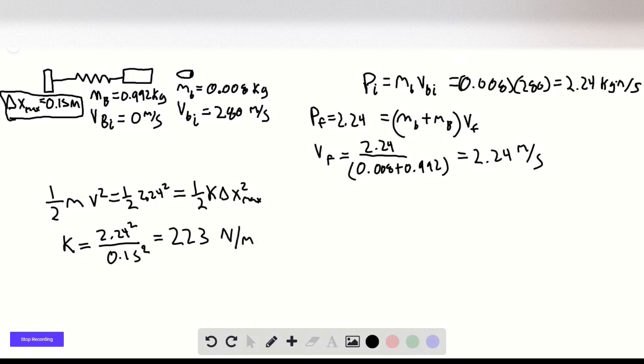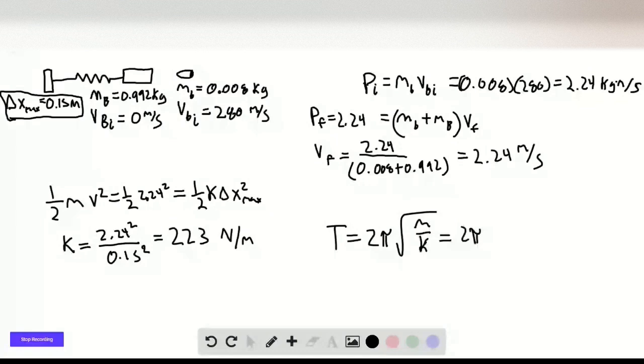Now if we want to find the period T, we know that the period is 2π times the square root of m over k. So this is the total m, which is 1. So this is 2π divided by the square root of 223, which equals 0.421 seconds.